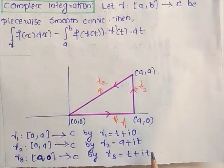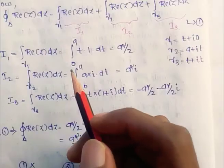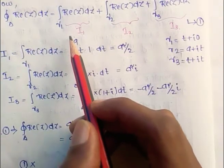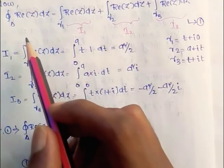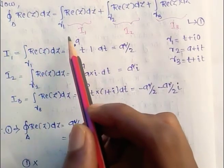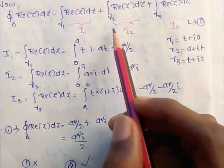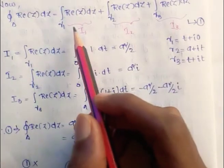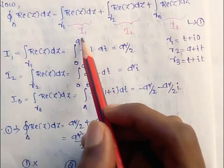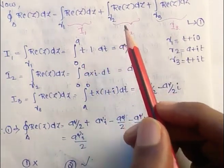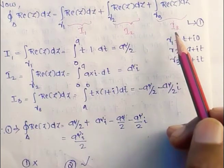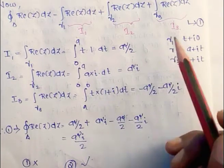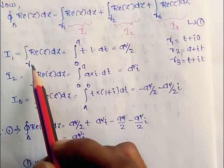Now we want to find the contour integral of Re(z) dz over delta. The integral over delta can be split as: integral over gamma 1 plus integral over gamma 2 plus integral over gamma 3 of Re(z) dz. Call this equation 1, and let I1 = integral over gamma 1 of Re(z) dz, I2 = integral over gamma 2, and I3 = integral over gamma 3.